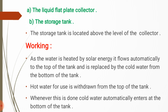Hot water for use is withdrawn from the top of the tank. This process happens within the same tank — hot water occupies the upper part and cold water the lower part. Heat transfers layer by layer through convection, and cold water is continuously replaced as hot water enters the tank. This is a loop process — cold water automatically enters at the bottom of the tank continuously.